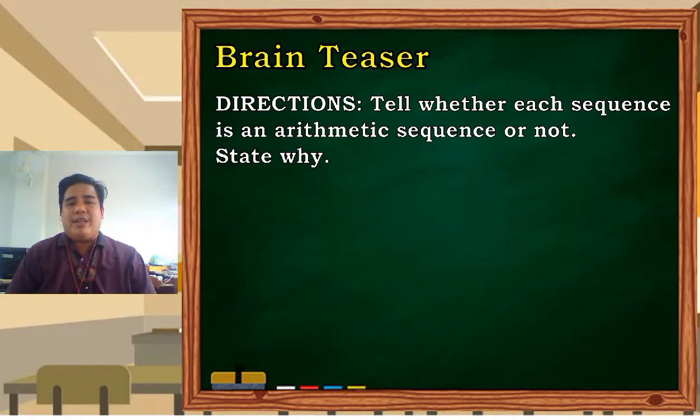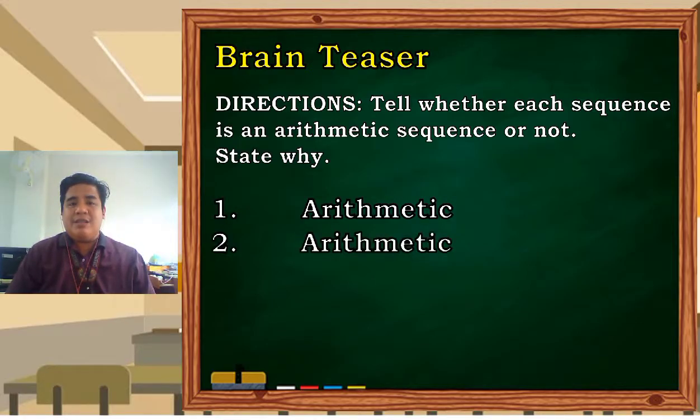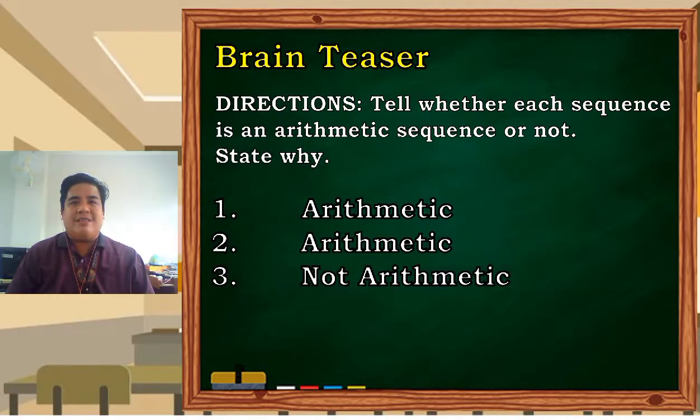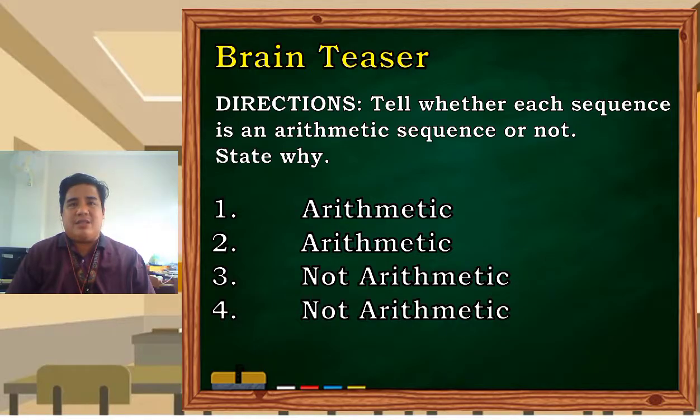Let us see if your answers are all correct. Number 1 is an arithmetic sequence. We'll see later why. Number 2 is also an arithmetic sequence. Number 3 is not an arithmetic sequence. Number 4 is not an arithmetic sequence also. And the last one is an arithmetic sequence.